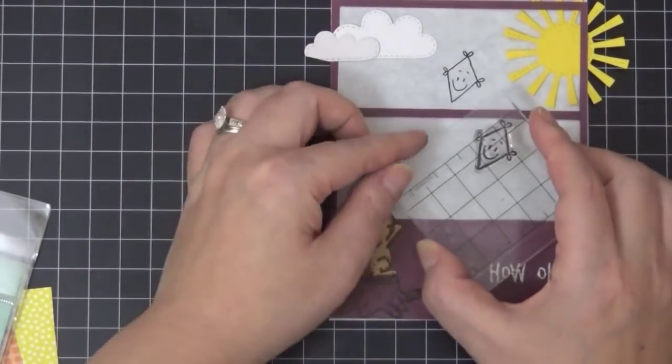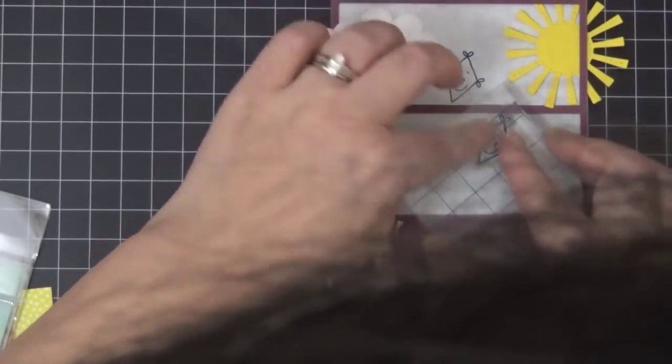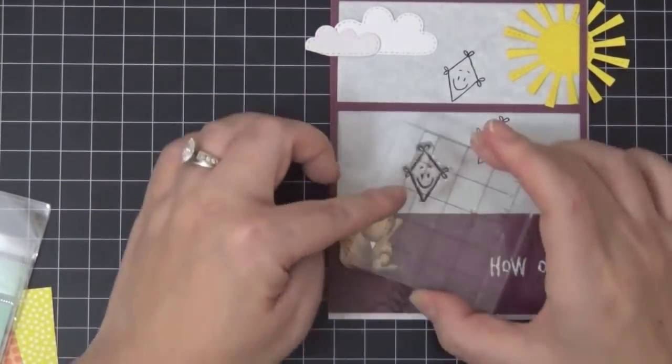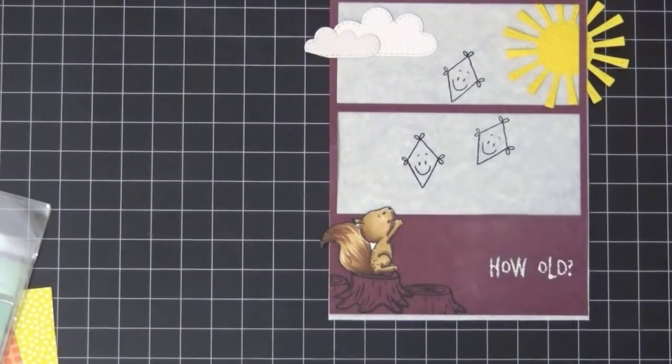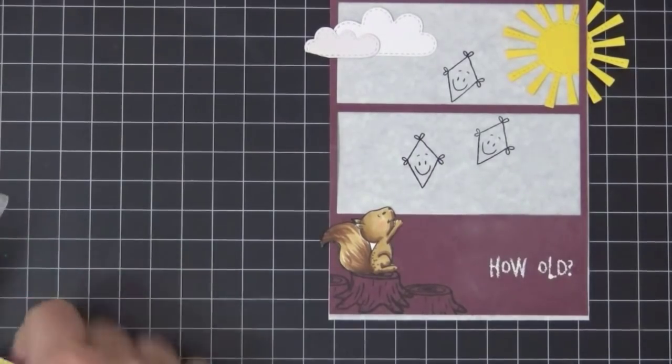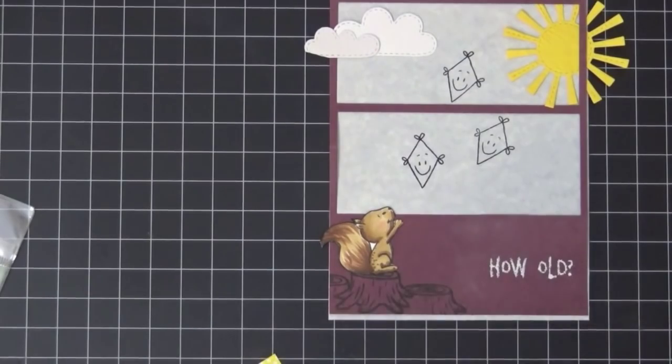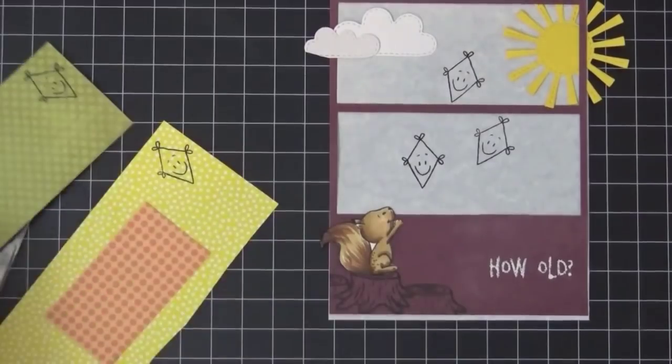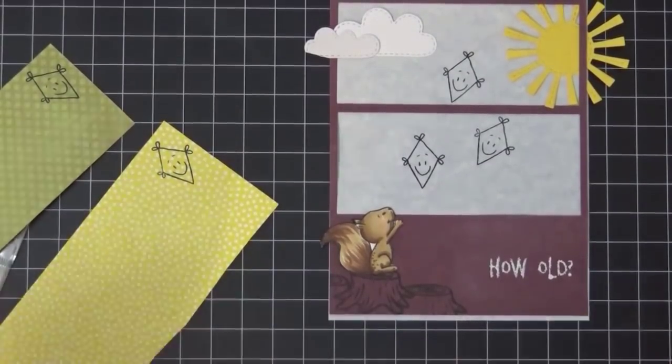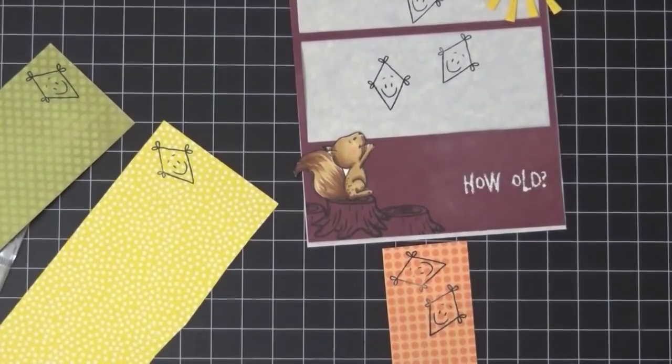And now I'm stamping my kites that my squirrel will be holding. So I did absolutely no inking for the sky. Here I have some design paper and I'm going to go ahead and stamp my kite on them and I'm going to cut them out, because I'm going to attach that to the kites. So I'm paper piecing the kites.